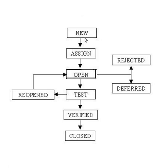In the second lifecycle, the tester verifies and validates the bug. If it is valid, the status is set to open and it is reported to the development team. The developer sees the new status of the bug. If the developer finds the defect valid, he will keep it as pending, or he can reject it — marking it as pending or rejected.